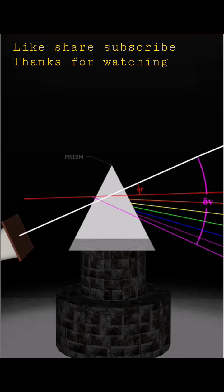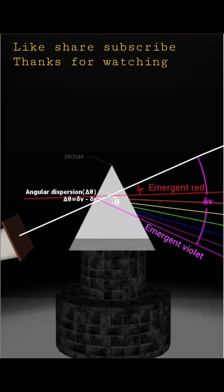Angular dispersion is defined as the difference of the angle of deviation of the extreme colors of the white light. It is the angle subtended between the direction of emergent violet and red rays of light from a prism.